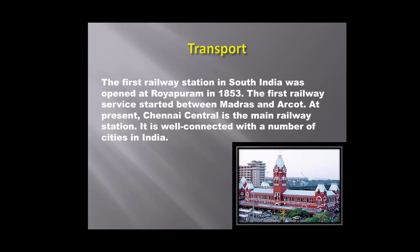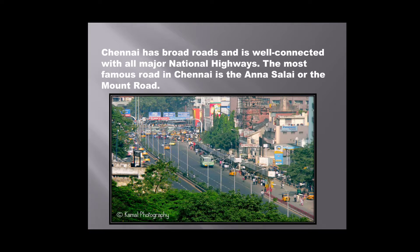The first railway station in south India was opened at Roypuram in 1853. The first railway service started between Madras and Arcot. At present, Chennai Central is the main railway station and is connected with a number of cities in India. Chennai has broad roads and is well connected with all major national highways. The most famous road is Annasalai, also known as Mount Road.